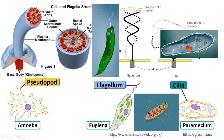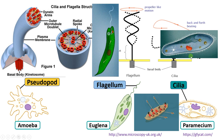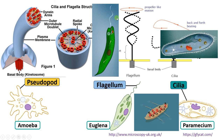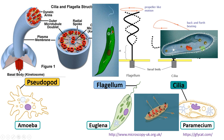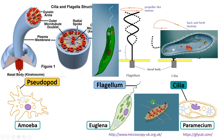Cilia have a back-and-forth beating movement, just like the oars of a boat, that propels the organism forward. The movement using cilia is very fast compared to movement using flagellum. It is a rhythmic back-and-forth movement that propels the organism forward.